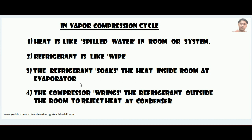The place where this soaking of heat happens is called the evaporator — this is a component of the vapor compression cycle. The refrigerant soaks the heat inside the room at the evaporator, just like the wipe soaks the water. The compressor wrings or squeezes the refrigerant to reject the heat, and that job happens in the condenser. Simply put: heat is like spilled water, and refrigerant is like the wipe.